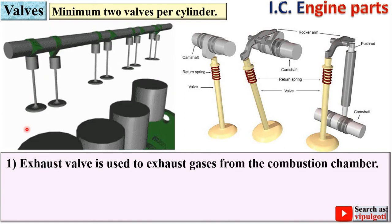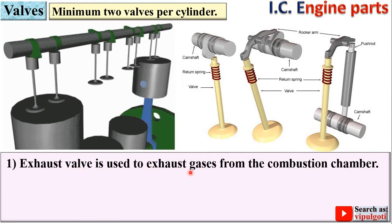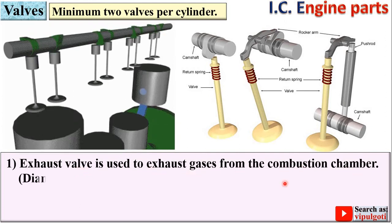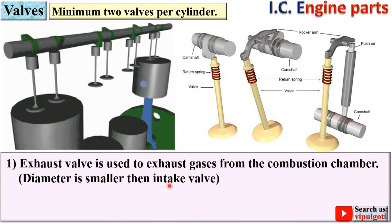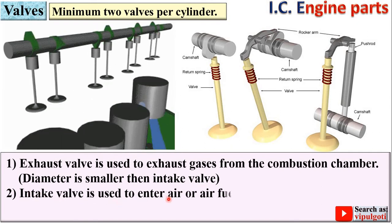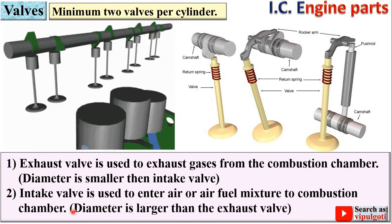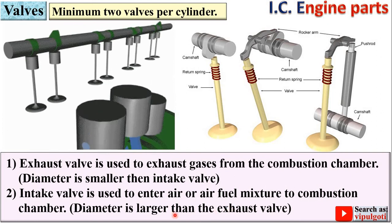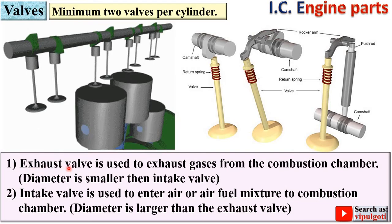One is the inlet valve and another one is the outlet valve, sometimes called the exhaust valve and inlet valve. The exhaust valve is used to exhaust gases from the combustion chamber, and its diameter is smaller than the intake valve — keep this in mind. The intake valve is used to admit air or air-fuel mixture into the combustion chamber, and its diameter is always larger than the exhaust valve.